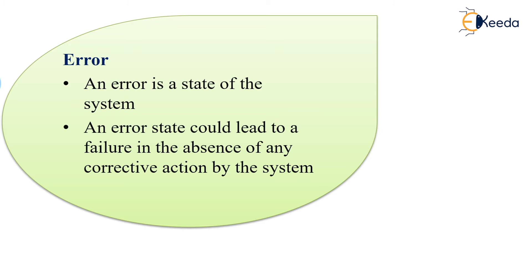The next terminology is about error. What is an error? An error is a state of the system that could lead to a failure in the absence of correct measures. A small mistake in a code is defined as an error — for example, an integer variable not defined, a function not called, a function name misspelled, or improper use of variables. This kind of mistake or error you find in your coding.